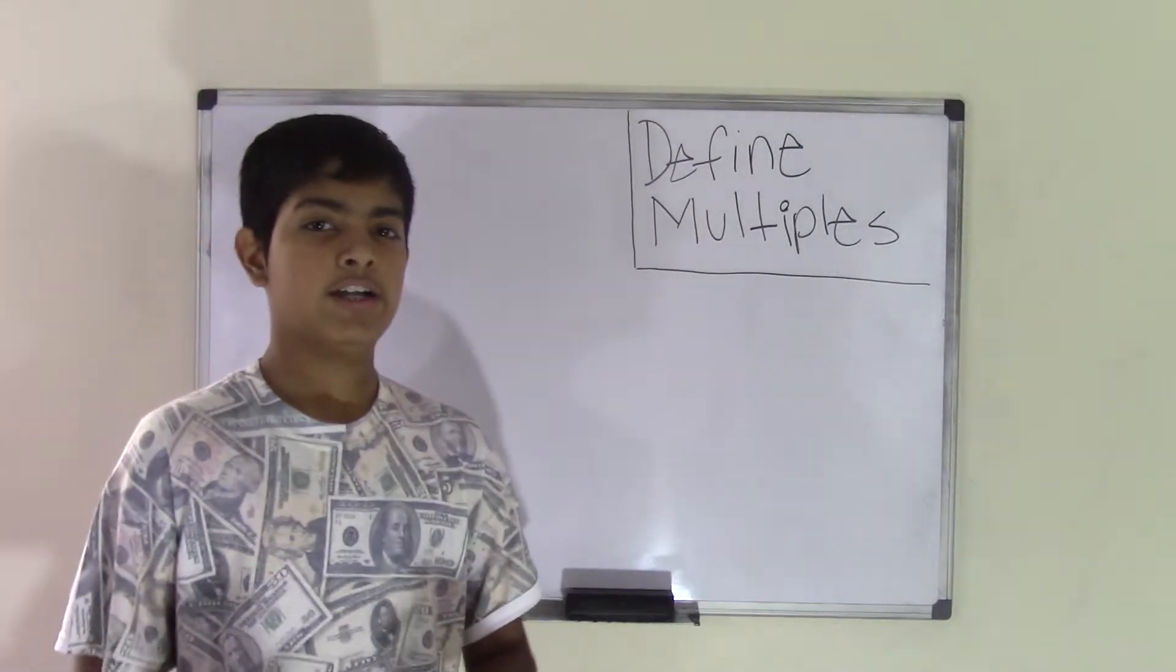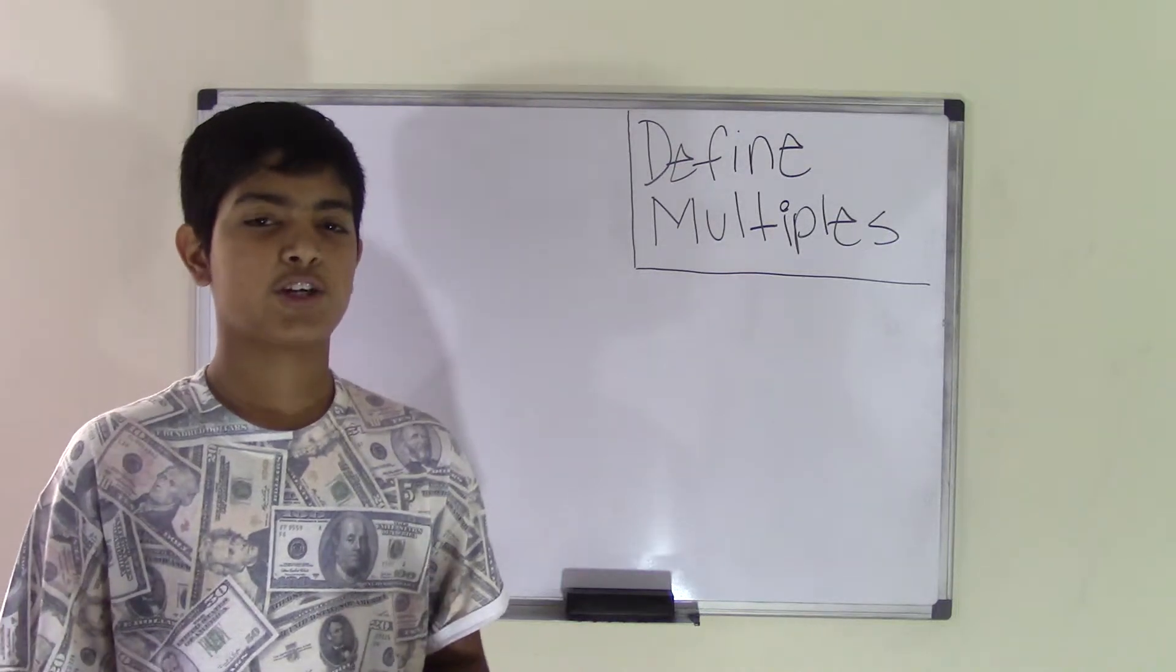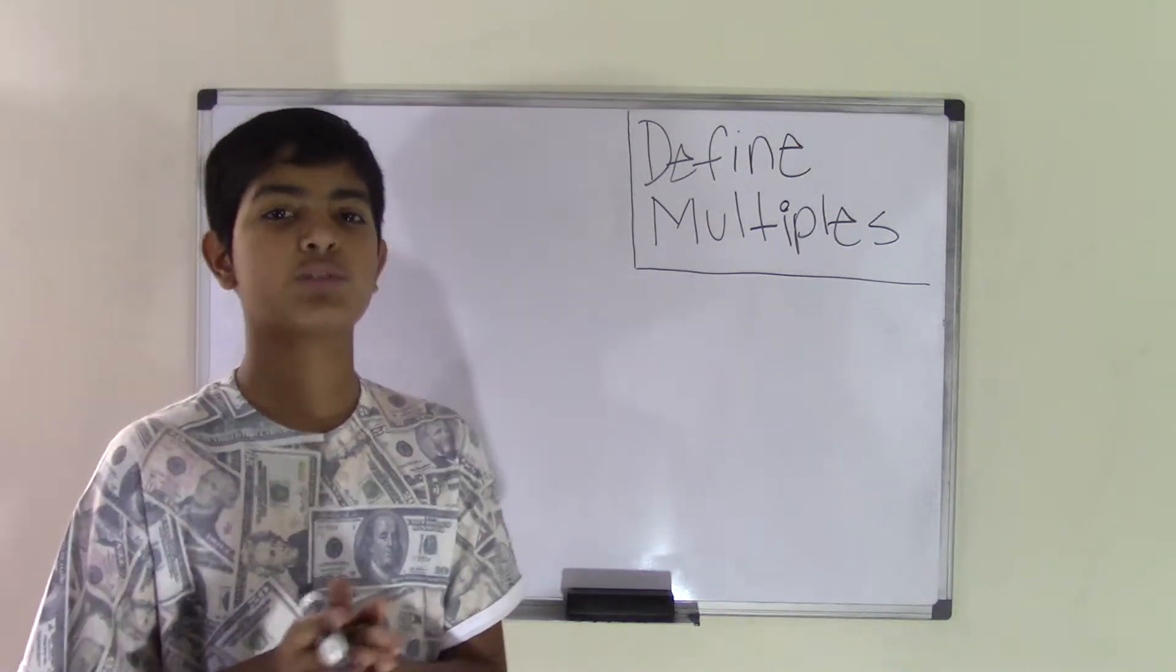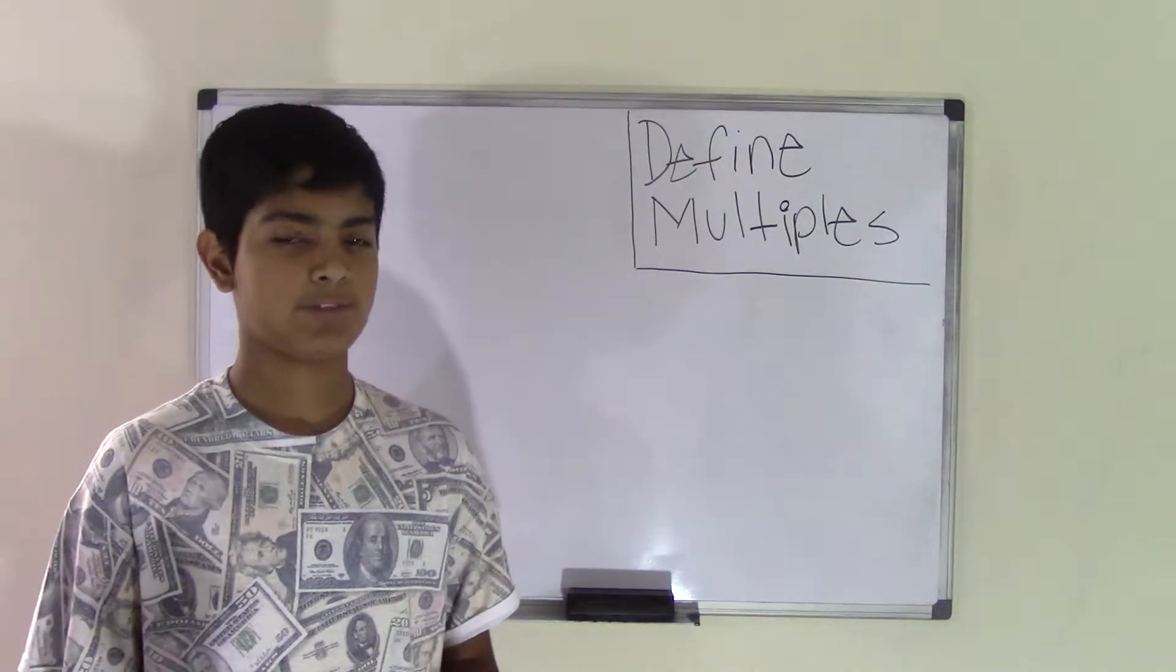Multiples are the numbers, the times table of a number. So multiple is another word for the times table. And if you don't know what the times table are, let me show you.